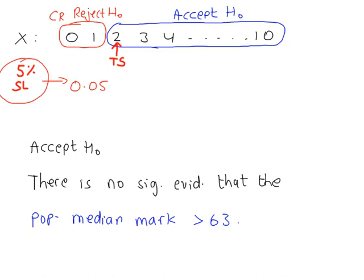We've accepted H0, so there's a possibility that a type 2 error was made. Within the context of the question, a type 2 error means we've accepted H0 when we should have rejected it — concluding that the median actually was greater than 63.